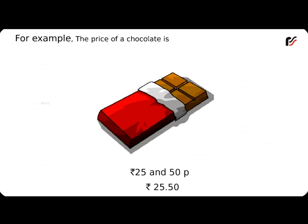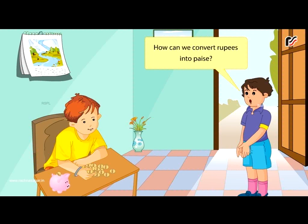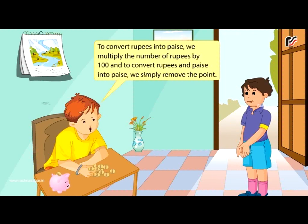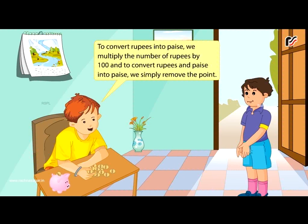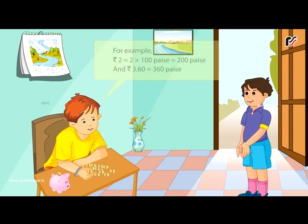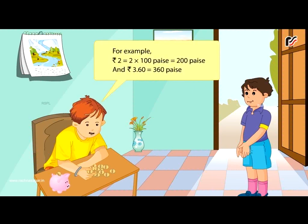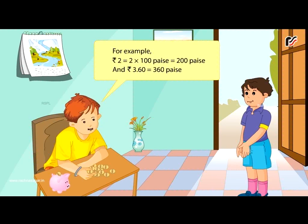Remember, the number on the left side of the dot shows rupees and that on the right side shows paise. To convert rupees into paise, we multiply the number of rupees by 100. And to convert rupees and paise into paise, we simply remove the point. For example, rupees 2 is equal to 2 × 100 = 200 paise, and ₹3.60 is equal to 360 paise.